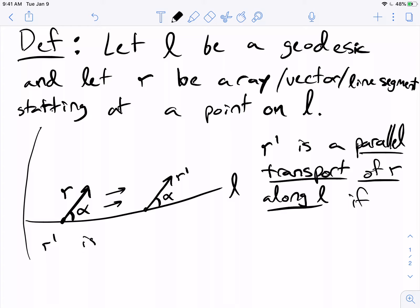If R prime is obtained from R by translating along L.